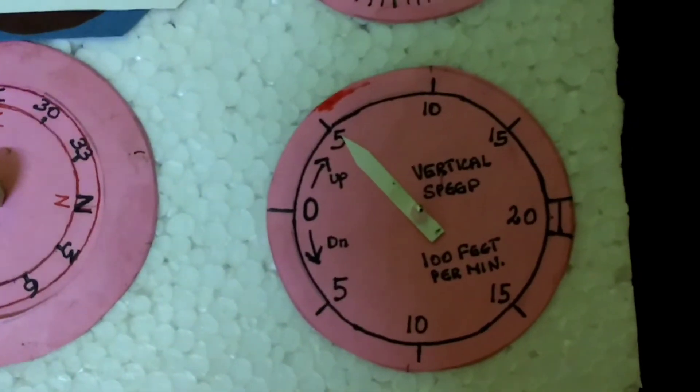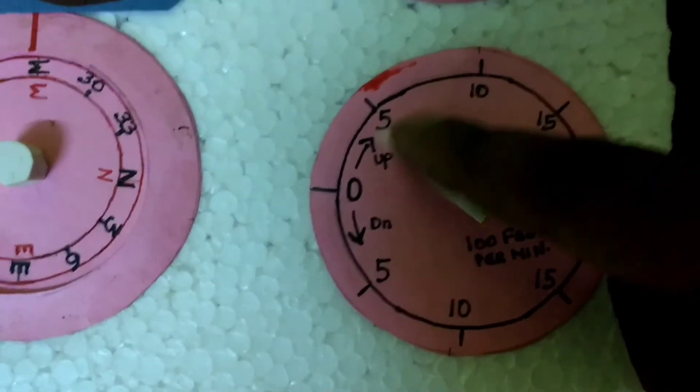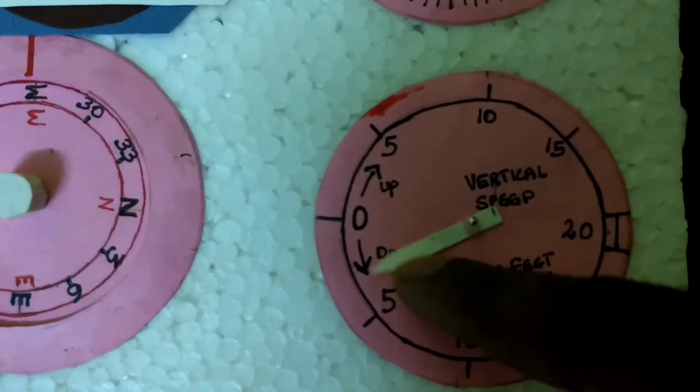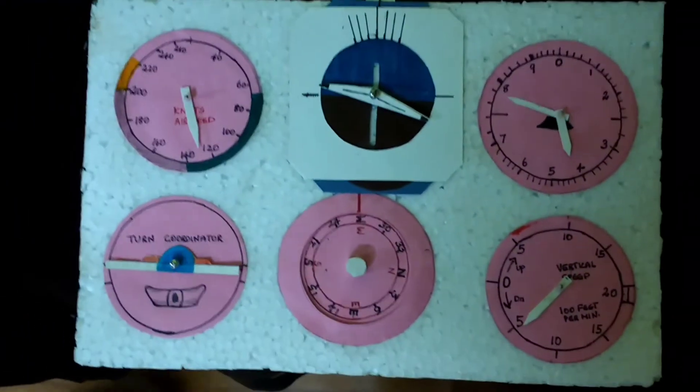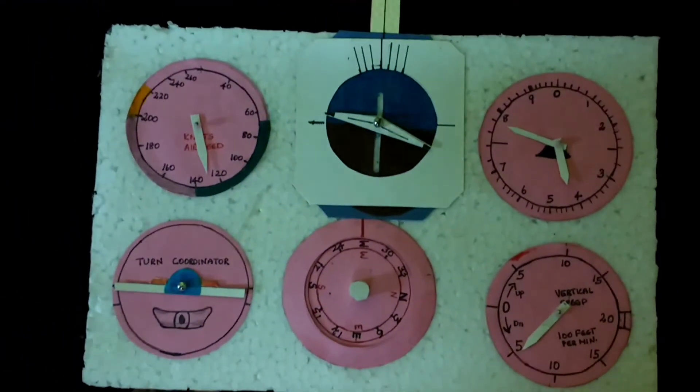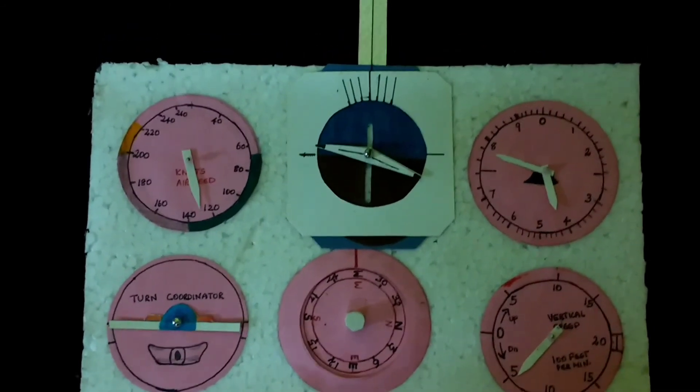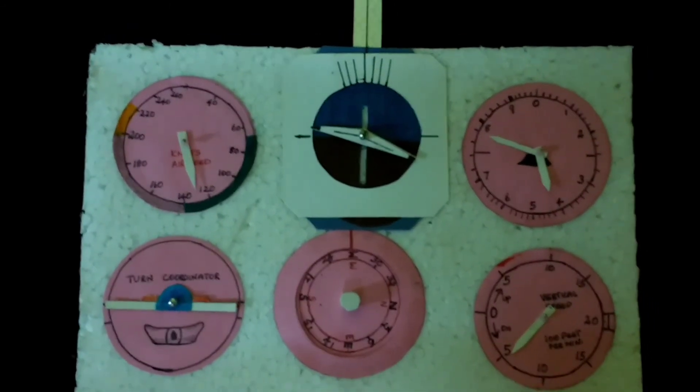The next is the vertical speed indicator. You can reset the hand to show whether it's climbing or descending. You can set up various variations and practice for your PAPT test.